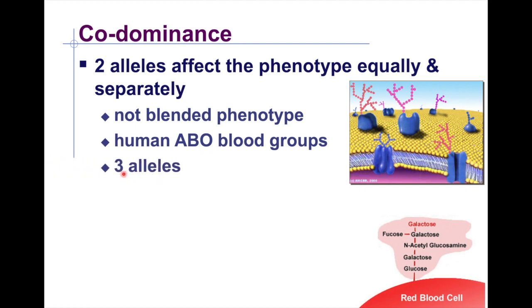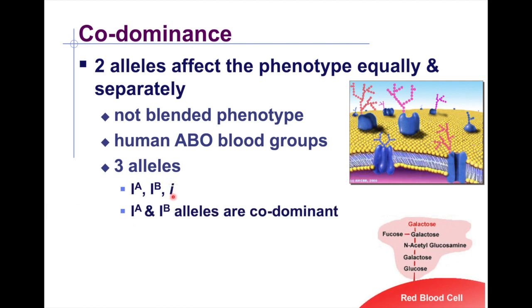There are at least three alleles: A, B, and O. IA is the allele for blood type A, IB is the allele for blood type B, and small i is the allele for blood type O. IA and IB are co-dominant — they have equal chances of being expressed. This is determined by the carbohydrates found on the surface of red blood cells.